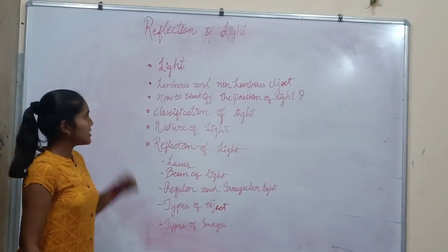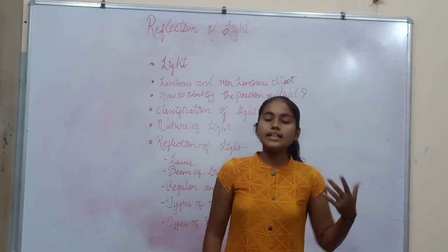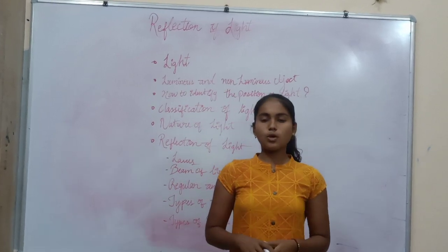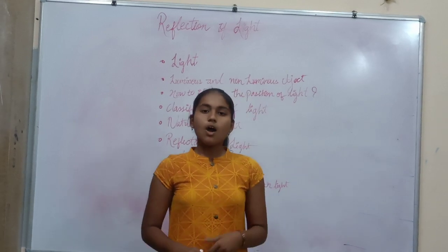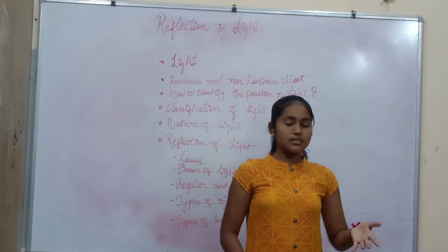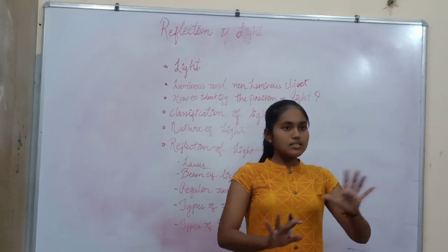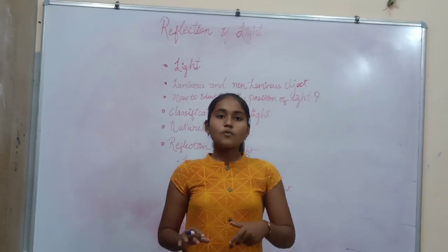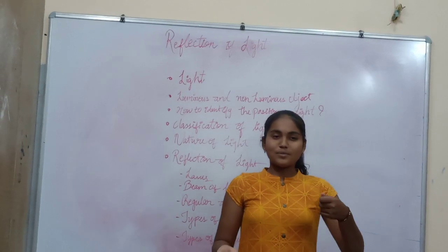What is luminous and non-luminous? Luminous objects are those objects from which light can be emitted from their own body — that can be called a luminous object. This light scatters all over in all directions. The best example of a luminous object is the sun, which scatters light all over the surface of the earth.